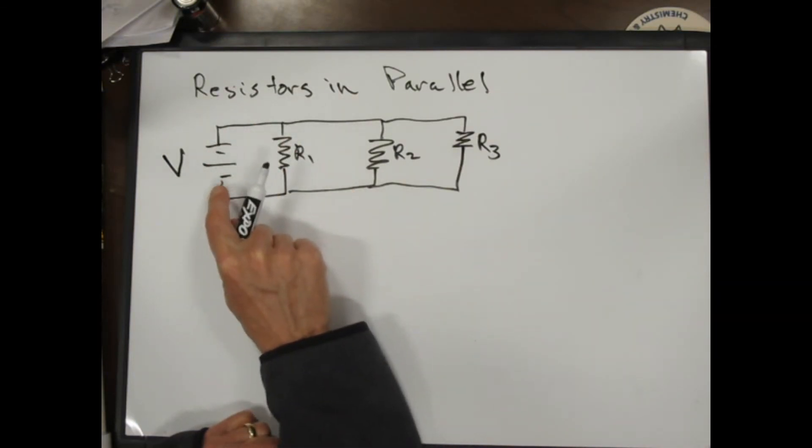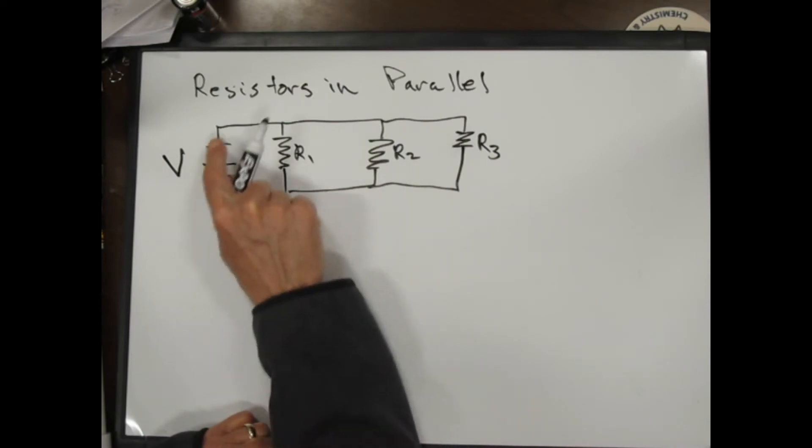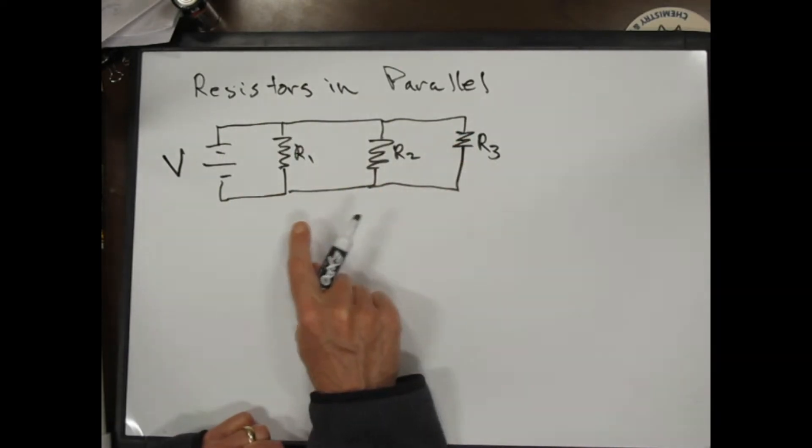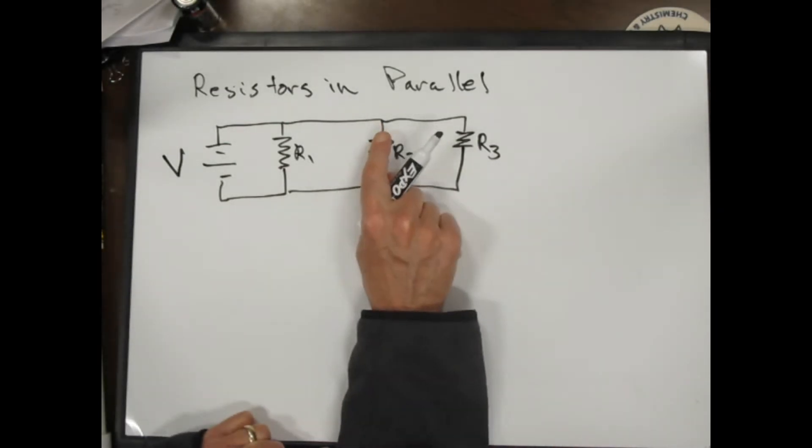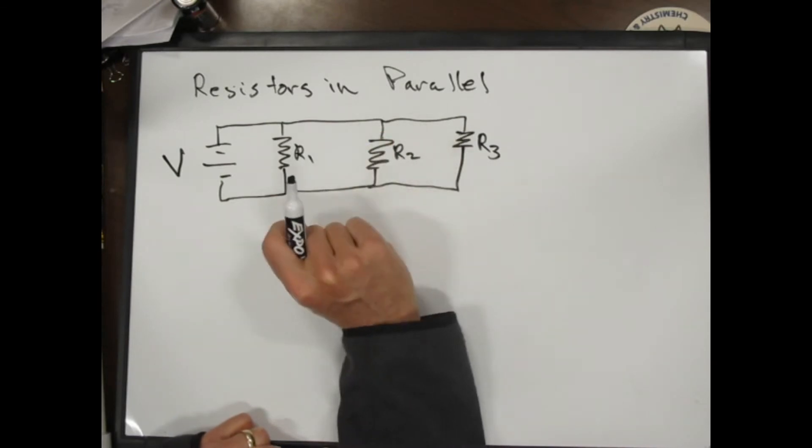Some of it can go through this resistor, some of it can go through this resistor, and some of it can go through this resistor. It doesn't loop back on itself because when you're going this way, you're going against the potential energy. It would be like rolling uphill and that doesn't happen.